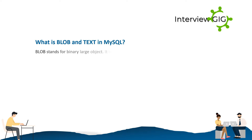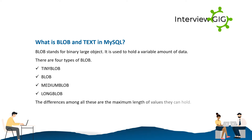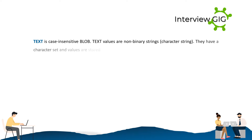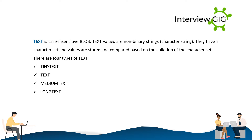What is BLOB and TEXT in MySQL? BLOB stands for Binary Large Object. It is used to hold a variable amount of data. There are four types of BLOB: TINYBLOB, BLOB, MEDIUMBLOB, LONGBLOB. The differences among all these are the maximum length of values they can hold. TEXT is a case-insensitive BLOB. Text values are non-binary strings (character strings). They have a character set and values are stored and compared based on the collation of the character set. There are four types of TEXT: TINYTEXT, TEXT, MEDIUMTEXT, LONGTEXT.